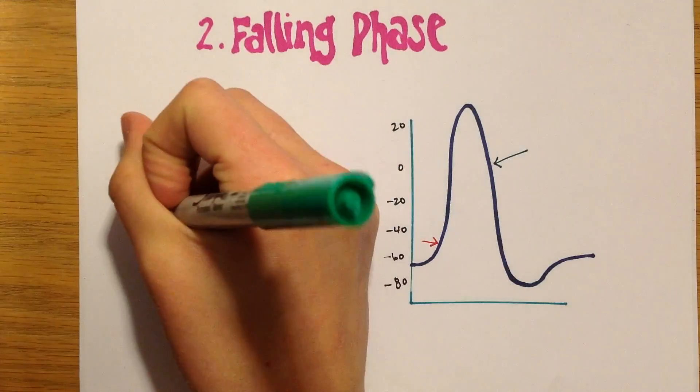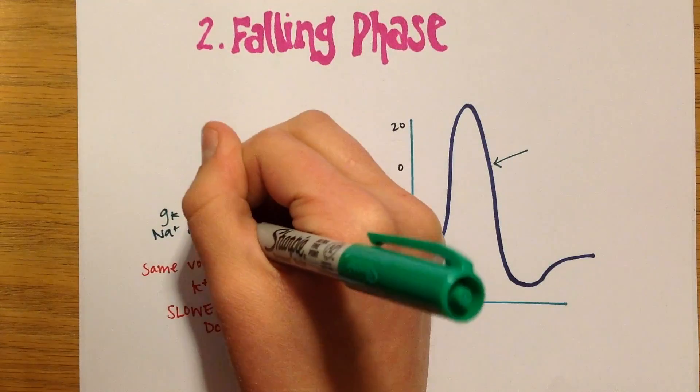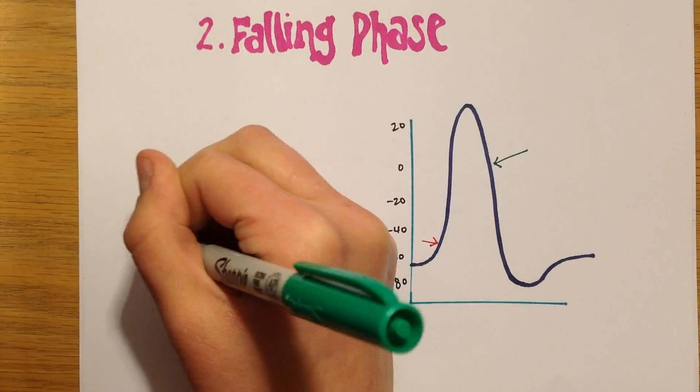As sodium channels become inactivated, potassium channels predominate, and the conductance of potassium is again greater than the conductance of sodium.